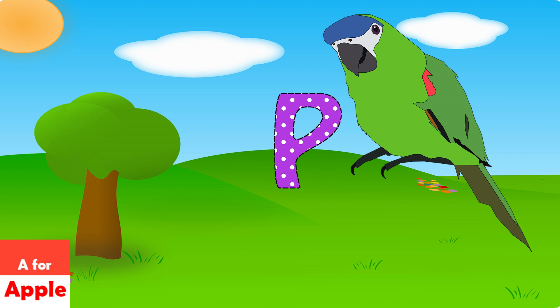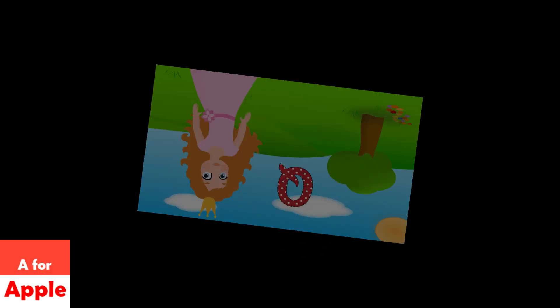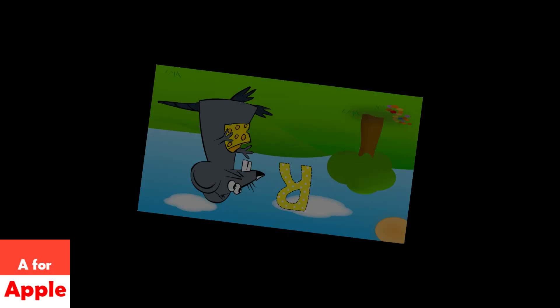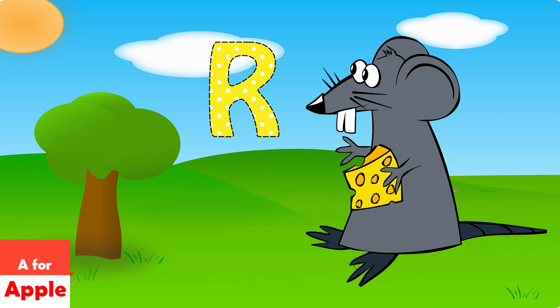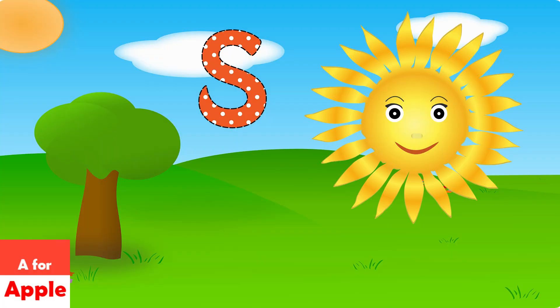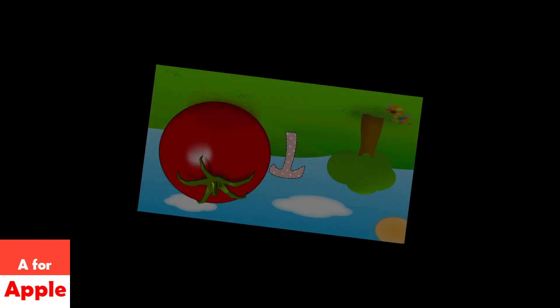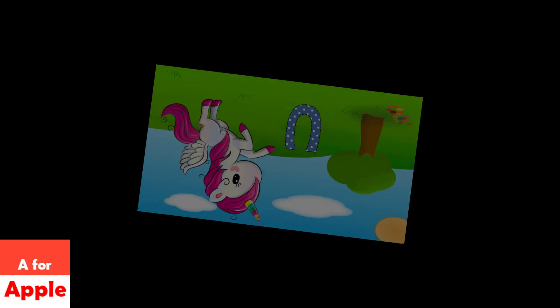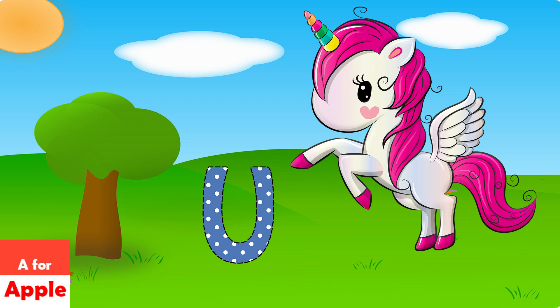P for parrot, Q for queen, R for rat, S for sun, T for tomato, U for unicorn.